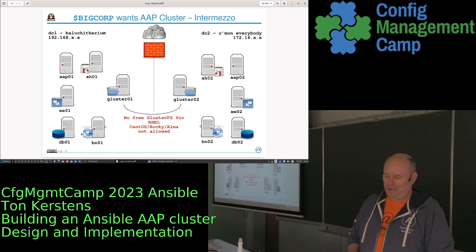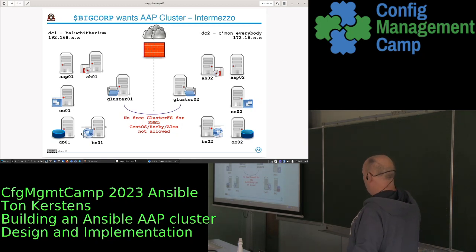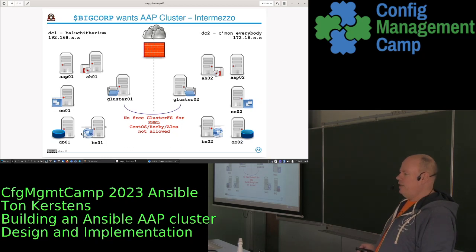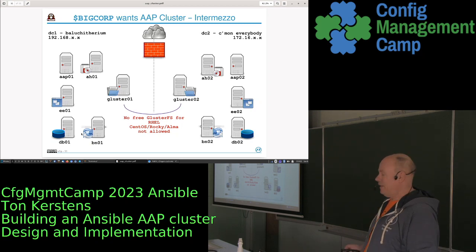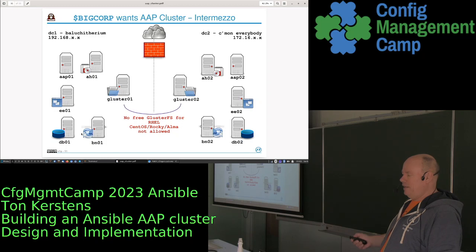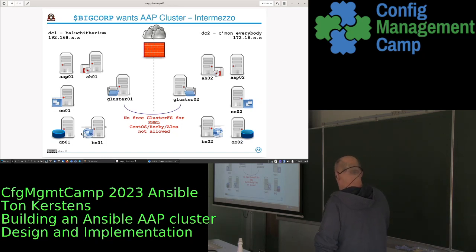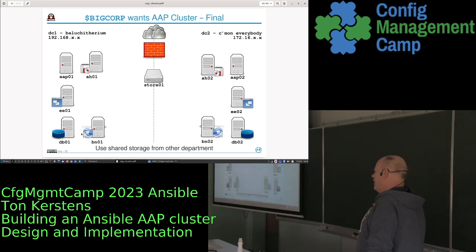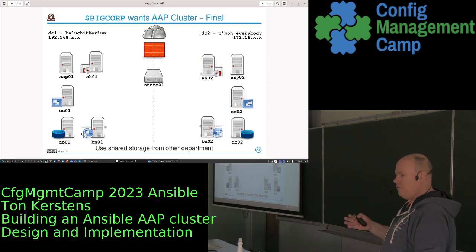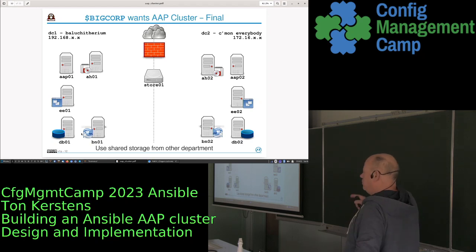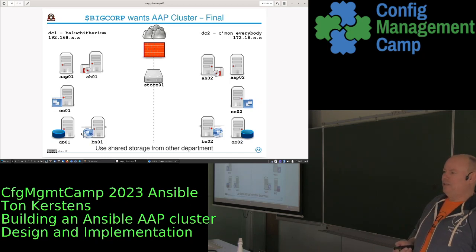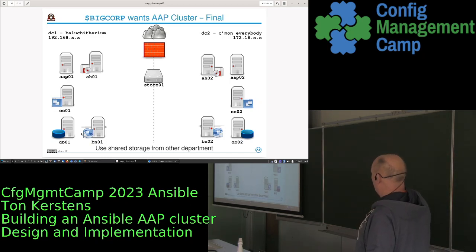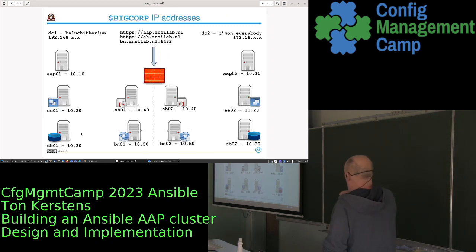We tried GlusterFS, but it's not freely available on Red Hat systems, and the corporation insisted on using only supported RHEL — no CentOS or Rocky. A full GlusterFS system just to share a single directory would be quite expensive. After long deliberation, we went to the Windows storage team and asked if they had a share available. They had NetApp systems already configured for high availability, so we borrowed a high-available datastore for the Automation Hub to share data between instances.